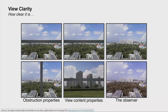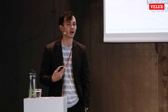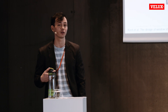We can do the same thing with view content — looking at the same horizontal mullion's impact on two different views. When contrasting that horizontal mullion against features which are primarily vertical, such as vertical high-rise buildings, the amount of view retention tends to be higher in terms of view clarity.